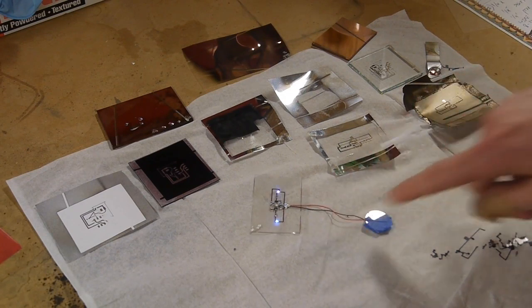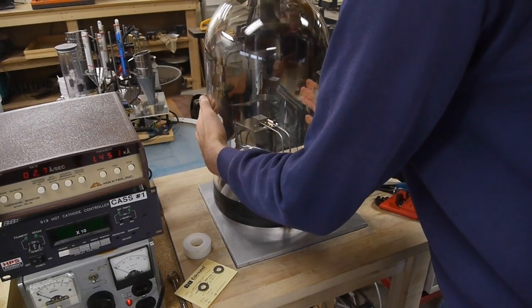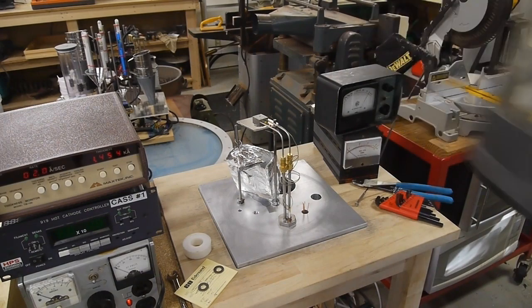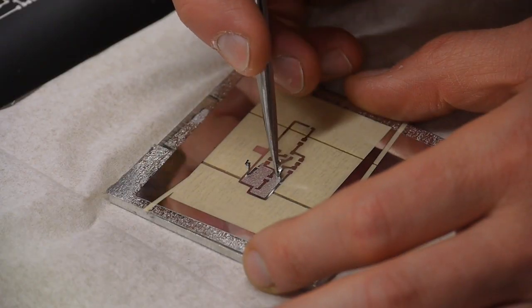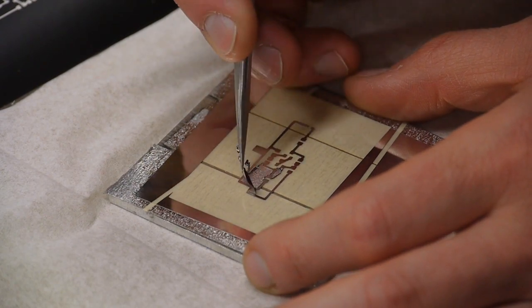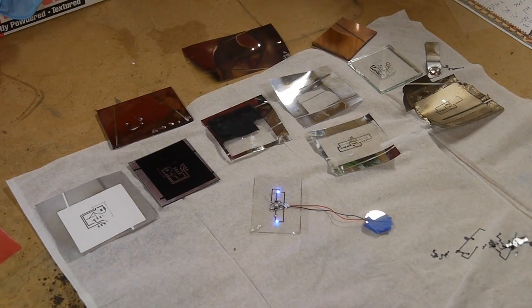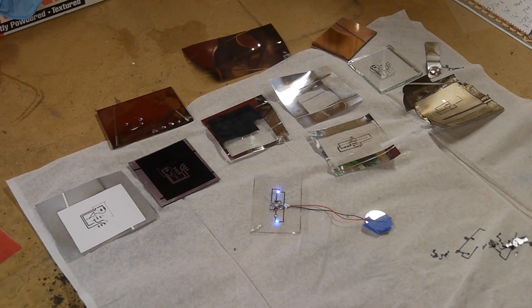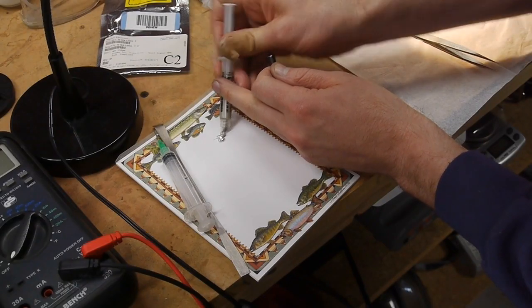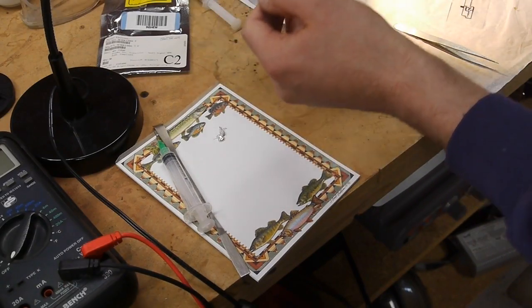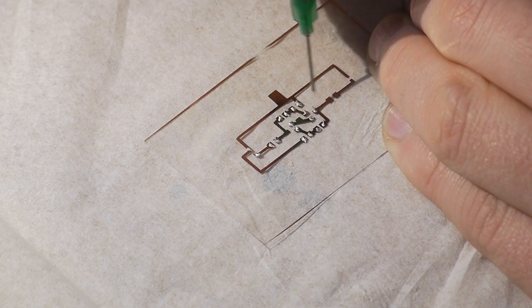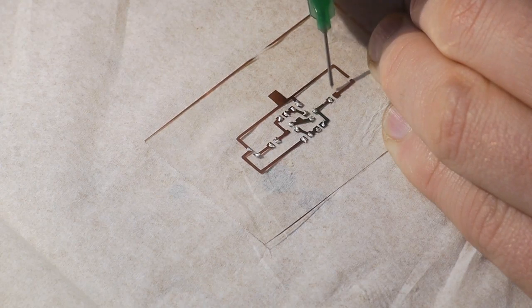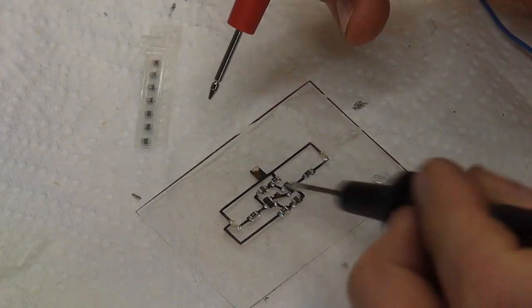After the metal has been deposited I take the sample out of the chamber and peel off the vinyl, leaving just the traces where I want them on the substrate. These printer transparencies are not able to withstand soldering temperatures, so I'm going to use a conductive epoxy glue to hold down the components onto the printed circuit. Fortunately all this ended up working out just fine and I had a working circuit at the end of the day.